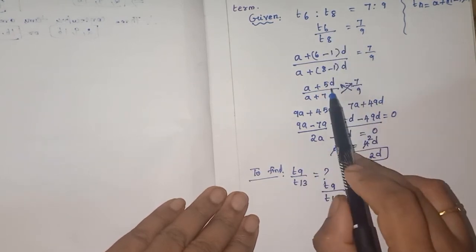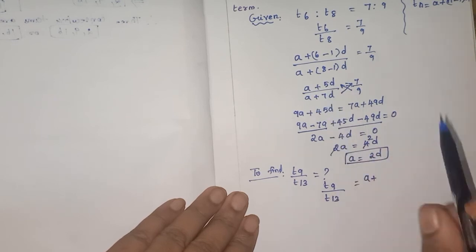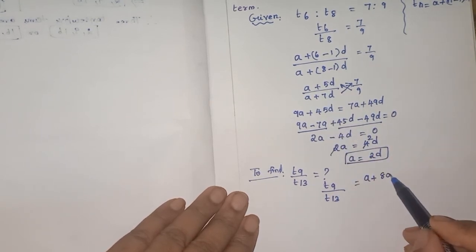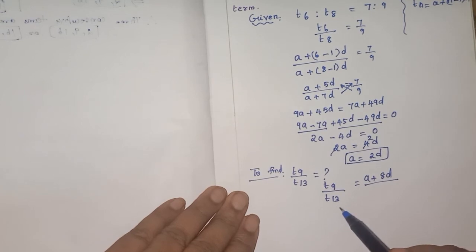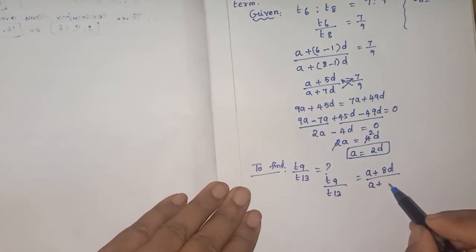So here also A plus 1 less than is what? 8D by here. A plus, yes, 12D. Now, same AP only.